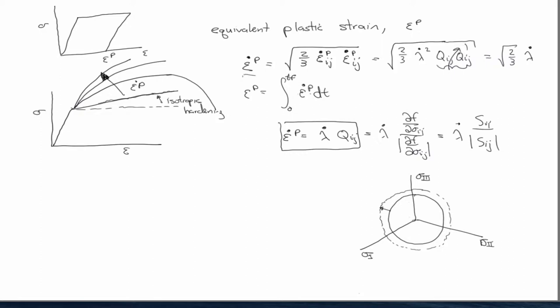The radius of the circle is the square root of 3j2 equal to y. Now, in the perfect plasticity case, y is just a constant. It's the yield stress. But what we're moving on to now is I'm saying that y is a function of the plastic strain.